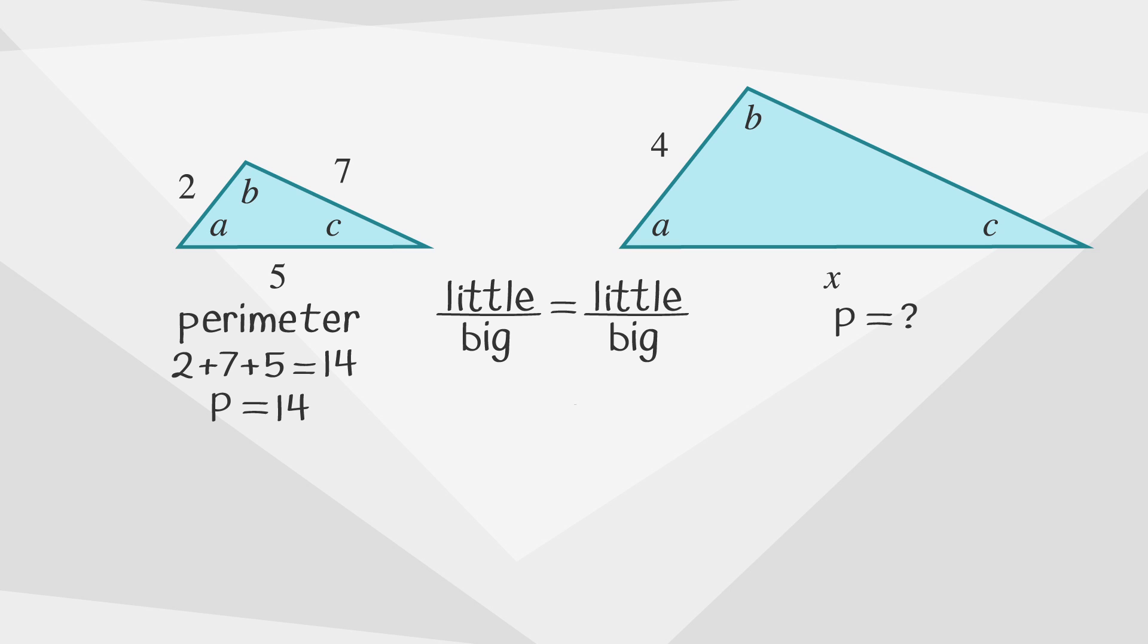Again we use the corresponding sides of two and four to find the ratio of little to big and then set that equal to the little perimeter, fourteen, over the big perimeter which we can call Y. Cross multiplying we get two Y equals fifty-six. Dividing each side by two we get Y equals twenty-eight. So if the little triangle's perimeter is fourteen the big triangle's perimeter is twenty-eight.